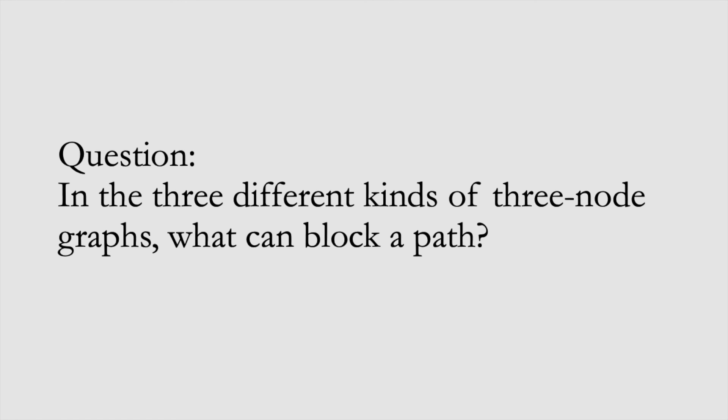That brings us to our next question, which is, in the three different kinds of three-node graphs, chains, forks, and immoralities, what can block a path?